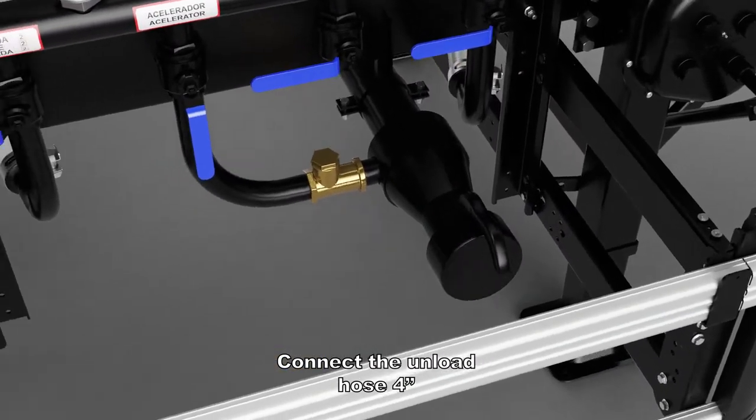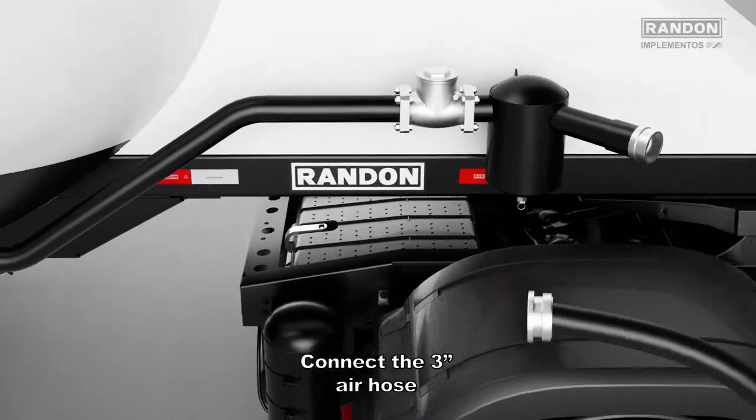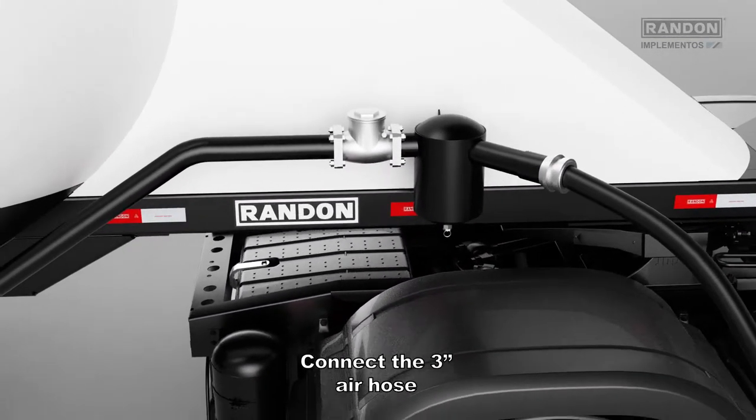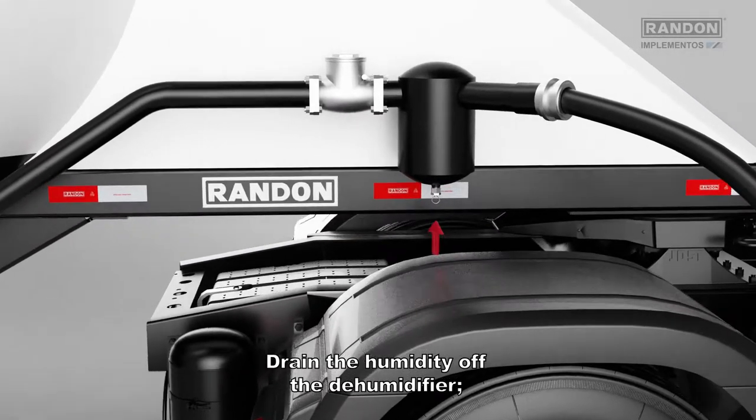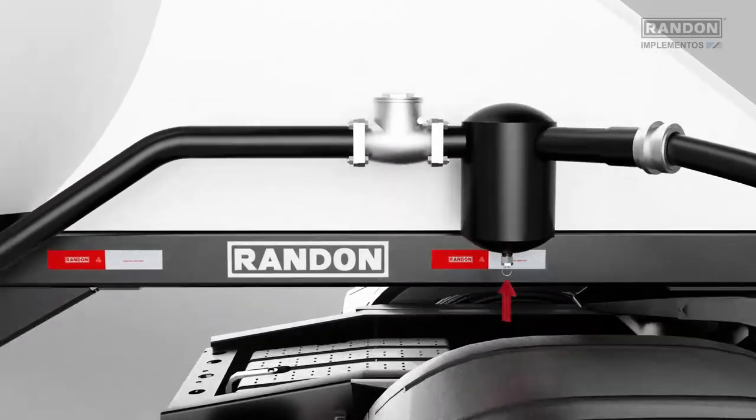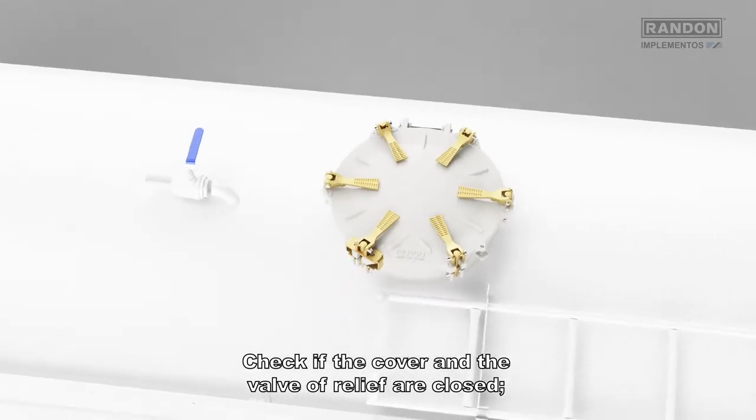Connect the unload hose four inch. Connect the three inch air hose. Drain the humidity of the dehumidifier. Check if the cover and the valve of relief are closed.